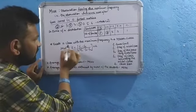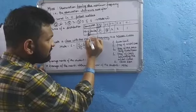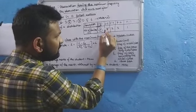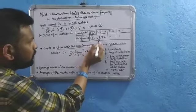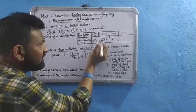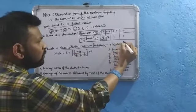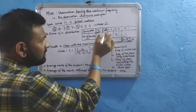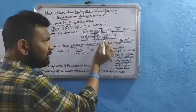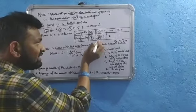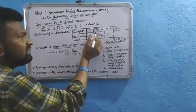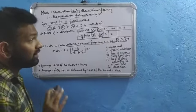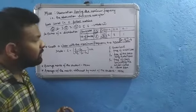What we know instead is the modal class — the class interval in which the frequency is maximum. Looking at the frequency of families: 7, 8, 2, 2, 1 — the maximum is 8. So the modal class is the class corresponding to frequency 8, which is the interval 3 to 5. So the modal class is 3 to 5.